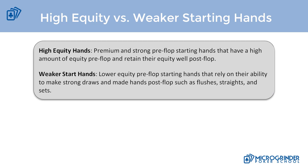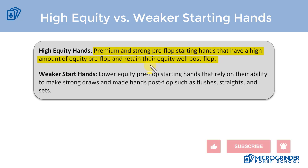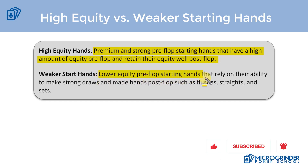In this video we're going to talk about high equity versus weaker starting hands. When we're talking about our preflop starting hands we can group them into these two broad categories: high equity hands and weaker starting hands. A high equity hand is a premium and strong preflop starting hand — one that has a high amount of equity preflop and retains its equity well post flop. Weaker starting hands have a lower amount of equity preflop and rely on their ability to make strong draws and turn those draws into strong hands post flop, such as flushes, straights, and sets.